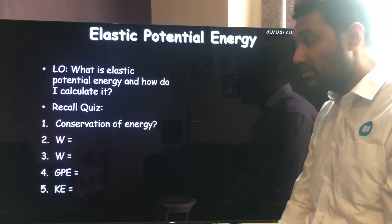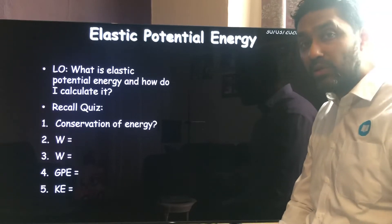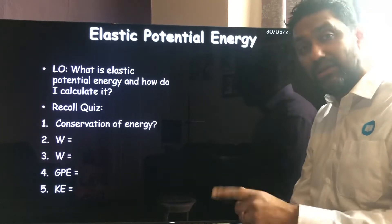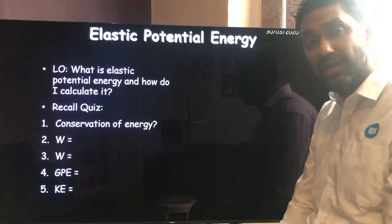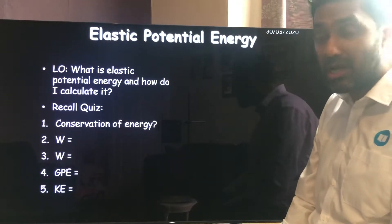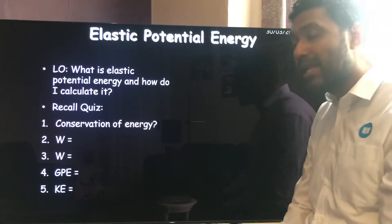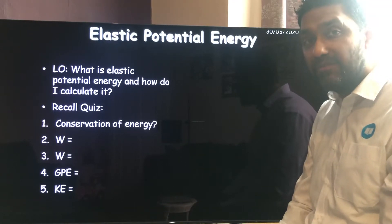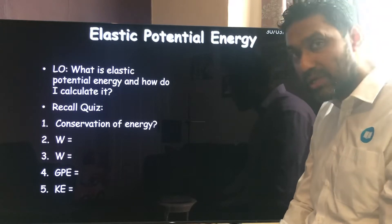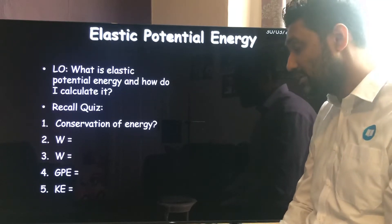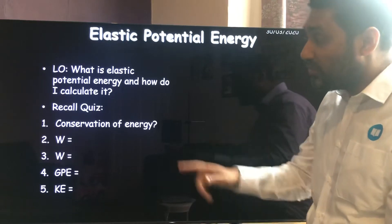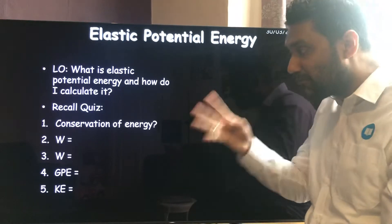Now remember our little rhyme: GPE equals mgh — that's mass times gravitational field strength times height. And KE equals half mv squared — kinetic energy is half times mass times velocity squared. Today's lesson introduces a fourth formula, so we're now on equation number four.